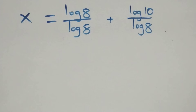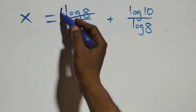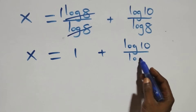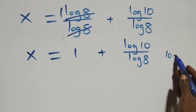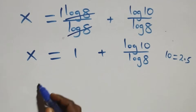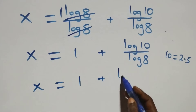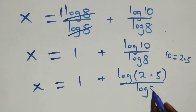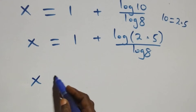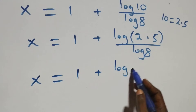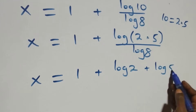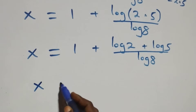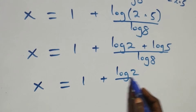Here, log 8 over log 8 cancels to give 1, which implies x equals 1 plus log 10 over log 8. We can also express 10 as 2 times 5, so x equals 1 plus log(2 times 5) over log 8. Applying the product rule again, x equals 1 plus log 2 over log 8, plus log 5 over log 8.